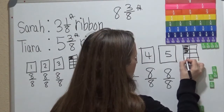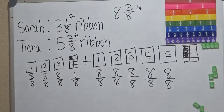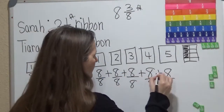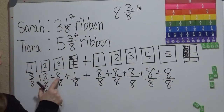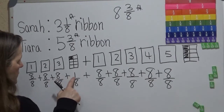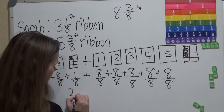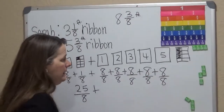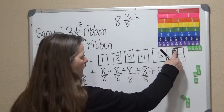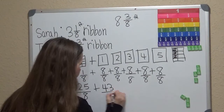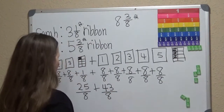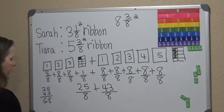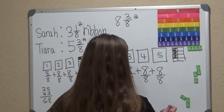So we have 3 sections that need to be shaded in. When we look at this, we can make this an improper fraction by adding them all up. 8 plus 8 plus 8 plus 8 gives us 24, plus 1 gives us 25 eighths for Sarah. Then 8 times 5 gives us 40, and then 41, 42, 43 — so 43 eighths for Tierra. Adding 25 and 43 gives us 68 eighths.